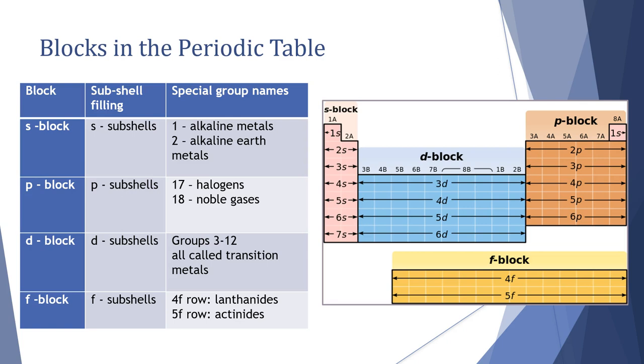These are the blocks that you're expected to know: group one and two form s block and this is because electrons go into s subshells when we do our electron configurations. D block are our transition metals, p block is where we tend to find our non-metals and metalloids and then our metals over here. And of course as we go down the steps, f block is where we find our actinoids and lanthanides.